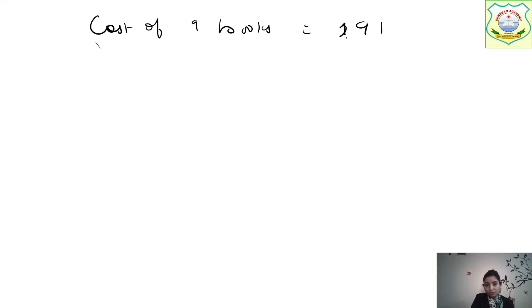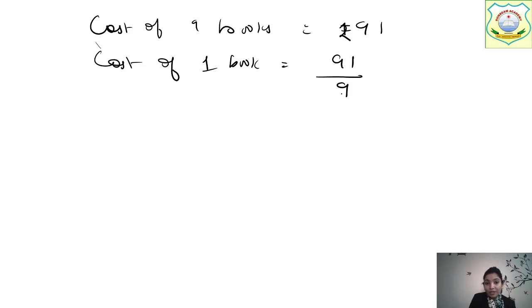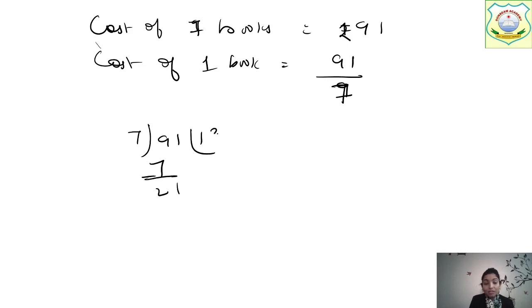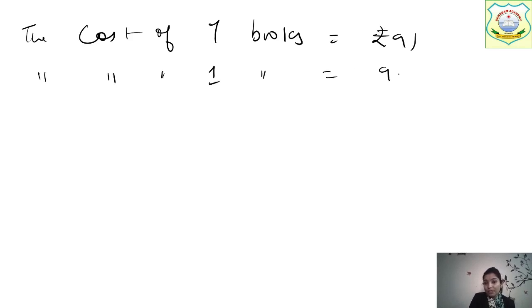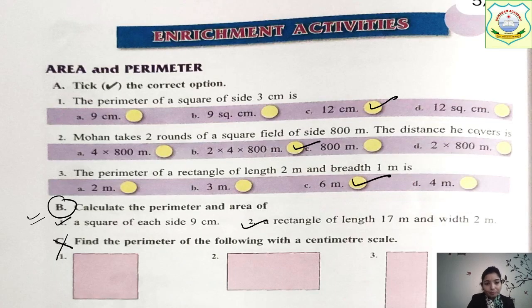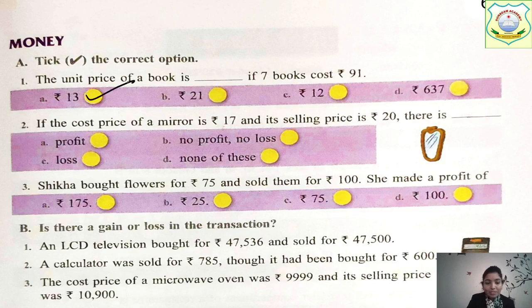Cost of 7 books is ₹91. We have to find the cost of one book. So cost of one book = 91 ÷ 7. Dividing: 7 ones are 7, 7 threes are 21 — so we get ₹13 as the cost of one book. Put a tick mark on ₹13.